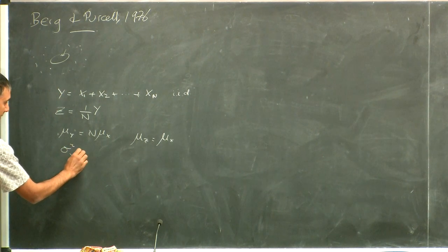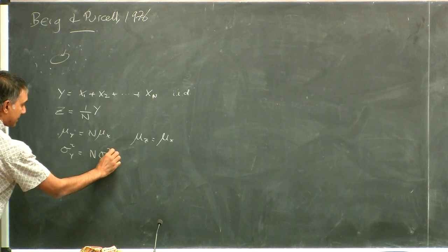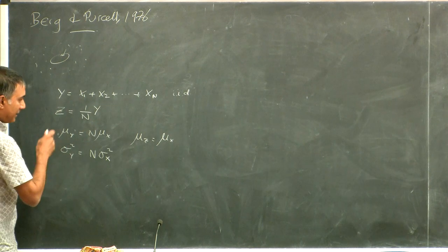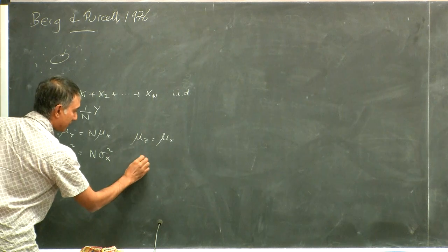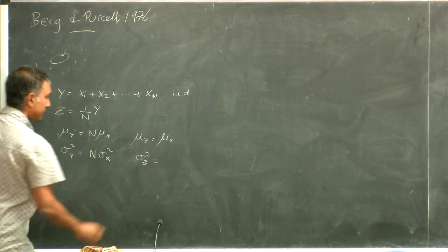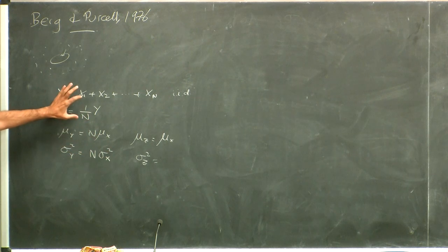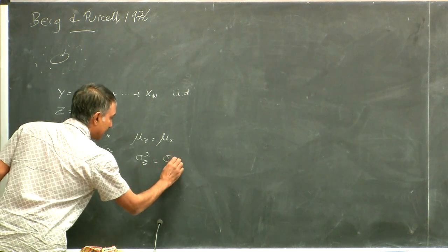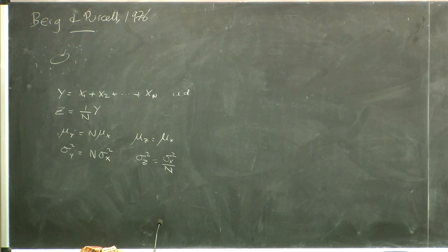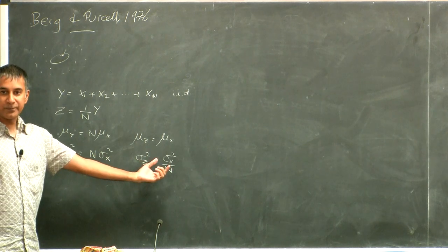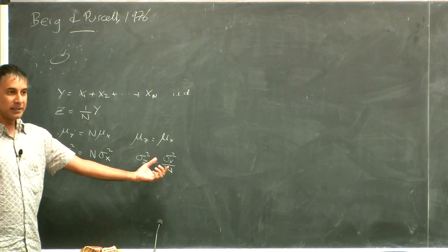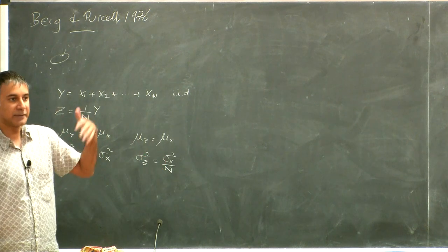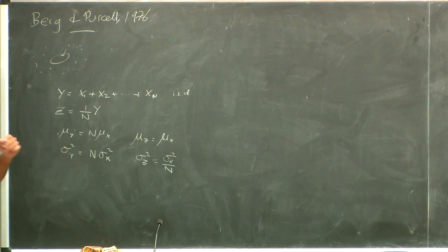The variance of Y is N times the variance of X, because uncorrelated variables add up plus and minus. Therefore the variance of Z is 1 over N squared times the variance of Y — so it'll be the variance of X divided by N. When a square root is applied, you get sigma of X divided by square root of N, and that quantity is called the standard error of the mean — a somewhat terrible term used in statistics.